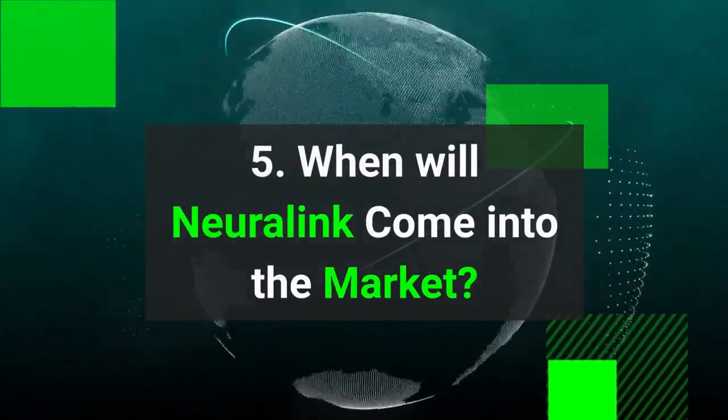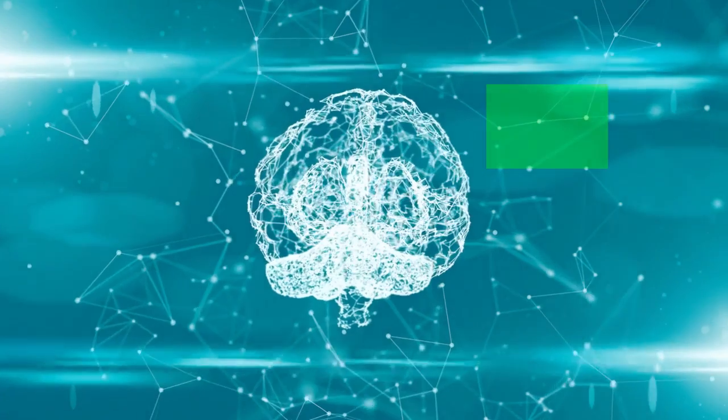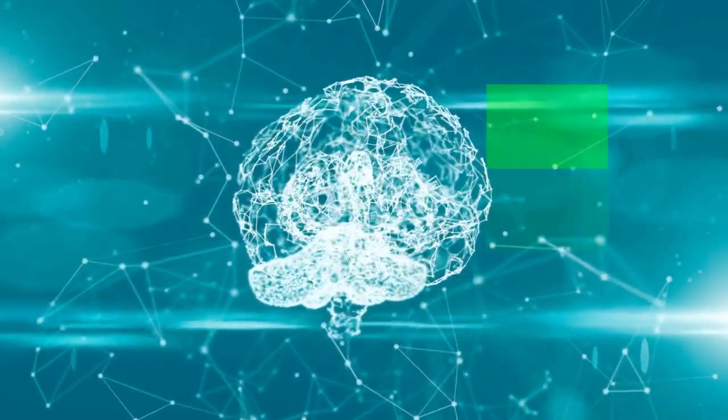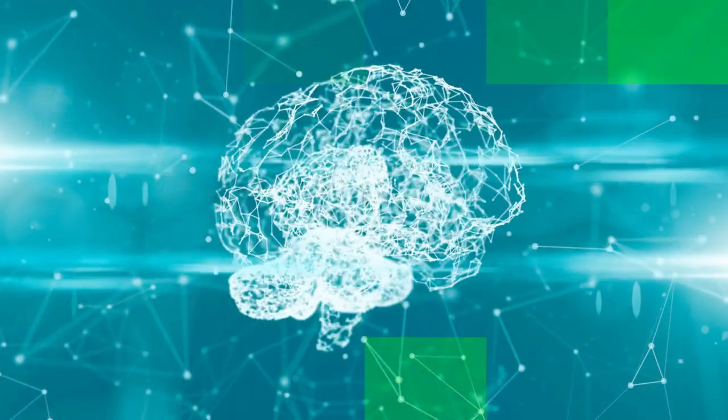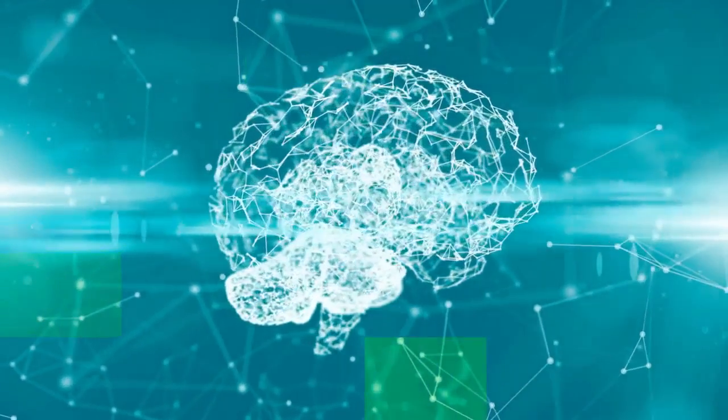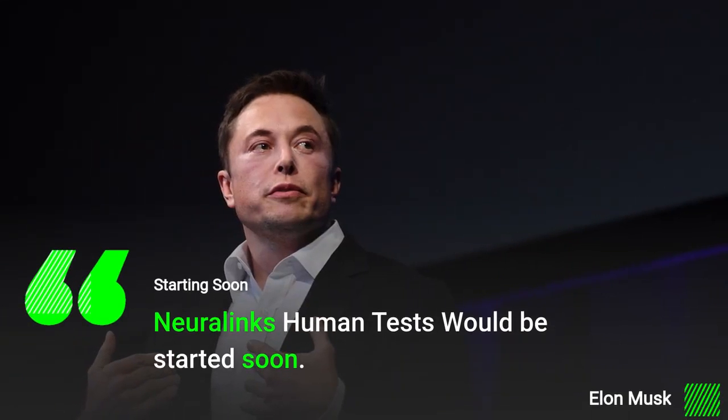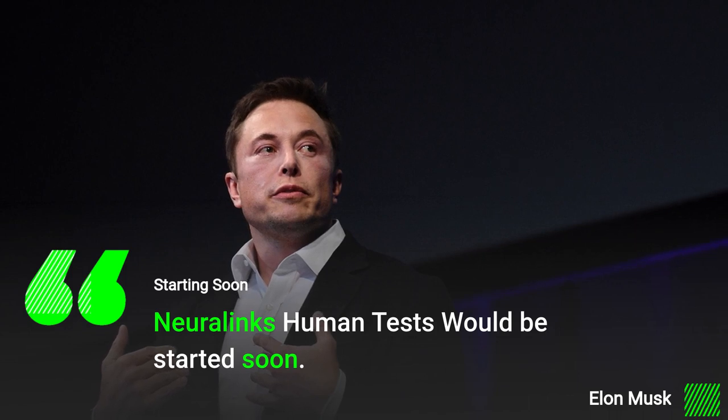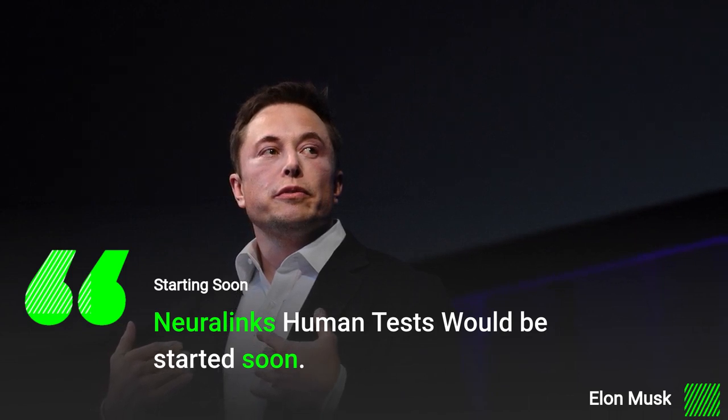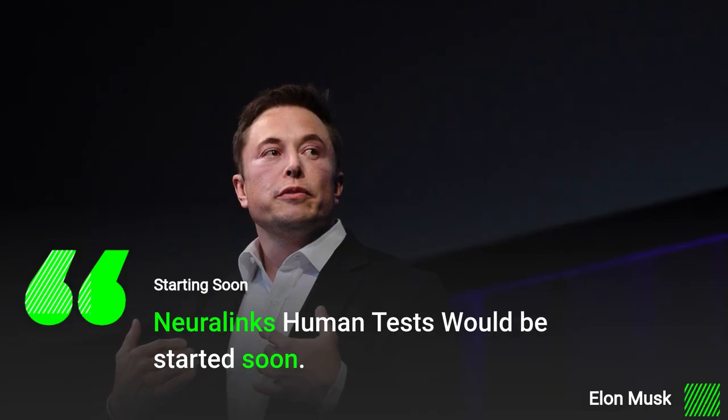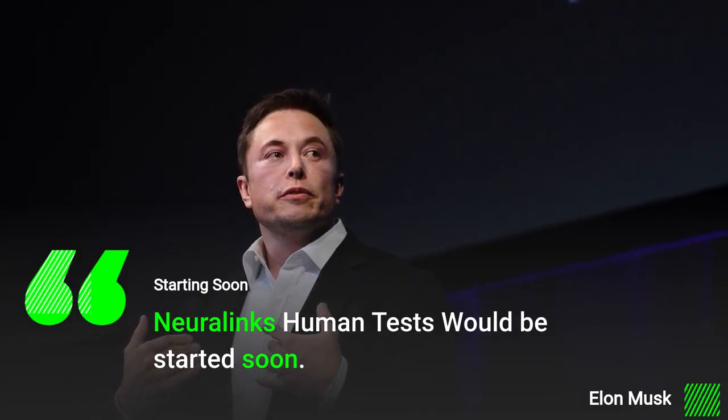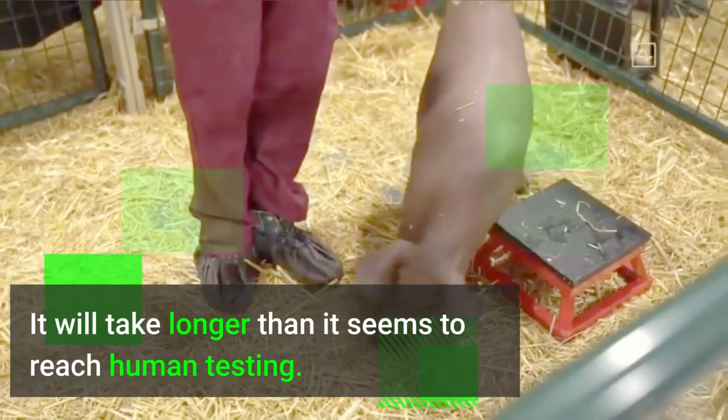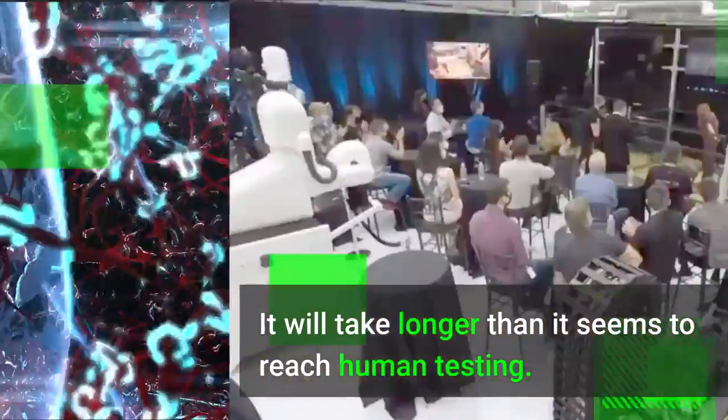When will Neuralink come into the market? Neuralink is a revolutionary device and a complicated device. There is a negative side to it on which the scientists are still working. But Elon Musk seems to be curious to launch this product as soon as possible, as he announced in an interview that Neuralink's human tests would be started soon. It seems like Elon Musk is underestimating the time that is going to be invested in building this device to be human-friendly. In the name of progress, we have three pigs on which the device is being tested. According to other scientists' statements and the results of the device and the pig, it feels like it will take longer for the device to reach human testing.